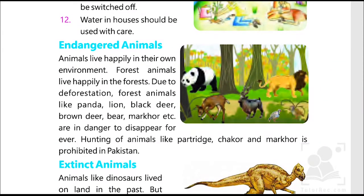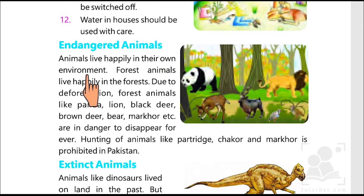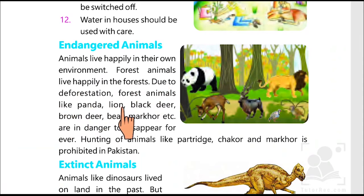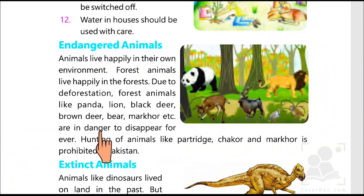Next we have a subtopic of endangered animals. Animals live happily in their own environment. Forest animals live happily in the forest. Due to deforestation, forest animals like panda, lion, black deer, brown deer, bear, marhor, etc. are in danger of disappearing forever.